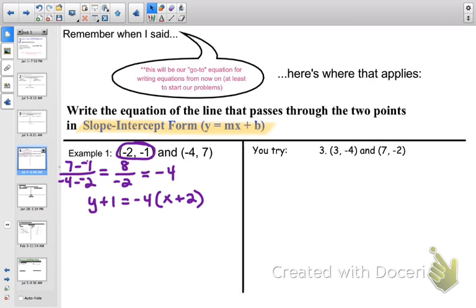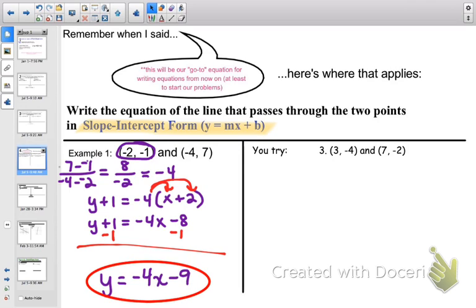Our first step is going to be to distribute. Get rid of those parentheses. y plus 1 equals negative 4 times x, negative 4 times positive 2 gives us negative 8. And then the only thing in the way is that little plus 1 on the left. We've got to move it over by subtracting it. So our final equation in slope-intercept form, negative 4x minus 9. Go ahead and do the you try.